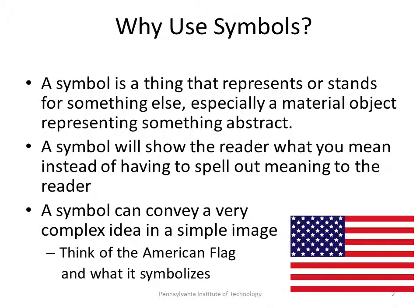So what is a symbol and why do we use it? A symbol is a thing that represents or stands for something else, especially a material object representing something abstract. A symbol will show the reader what you mean instead of having to spell out meaning to the reader. And more importantly, this is really why symbols are used in literature: a symbol conveys a very complex idea in a very simple image.